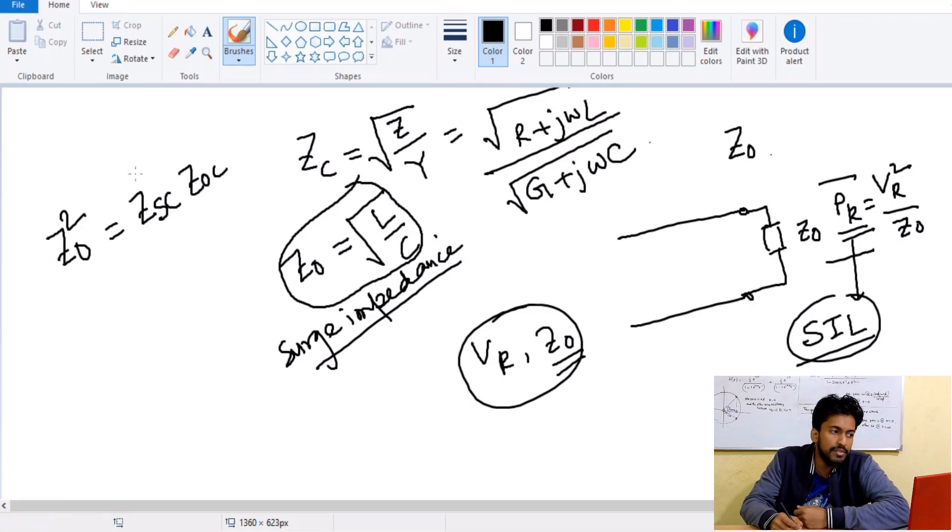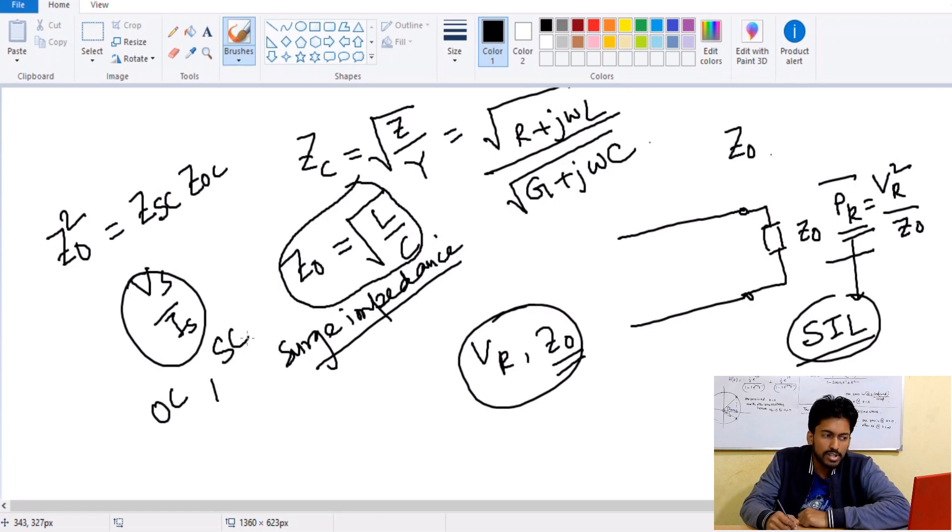Means what? We have to once short circuit the terminals of the transmission line. Again we have to open circuit the transmission line, and if we will be able to calculate the source voltage, that is the ratio of V_S and I_S for both the cases, once for open circuit condition, another for short circuit condition.